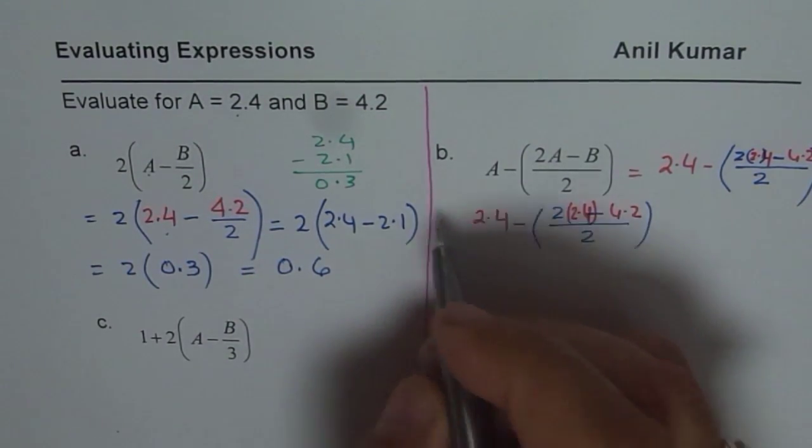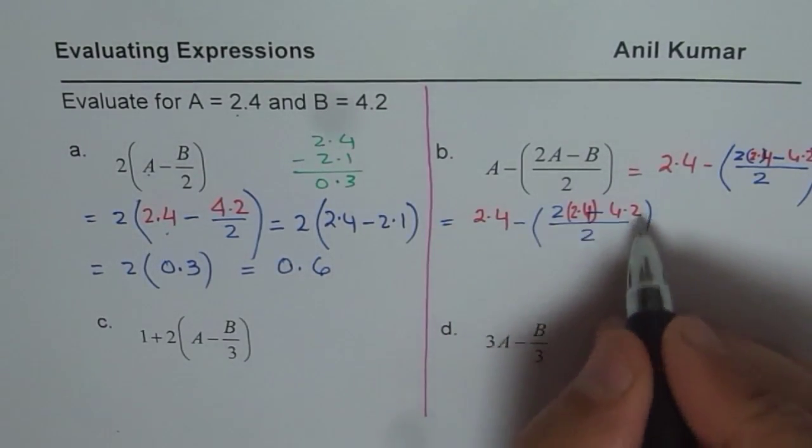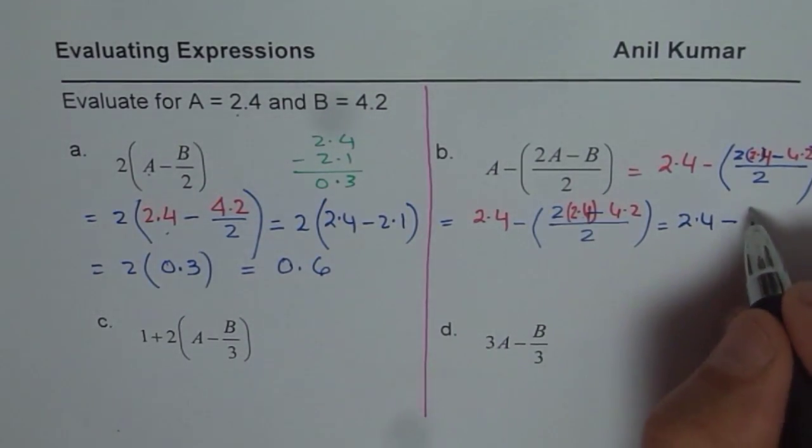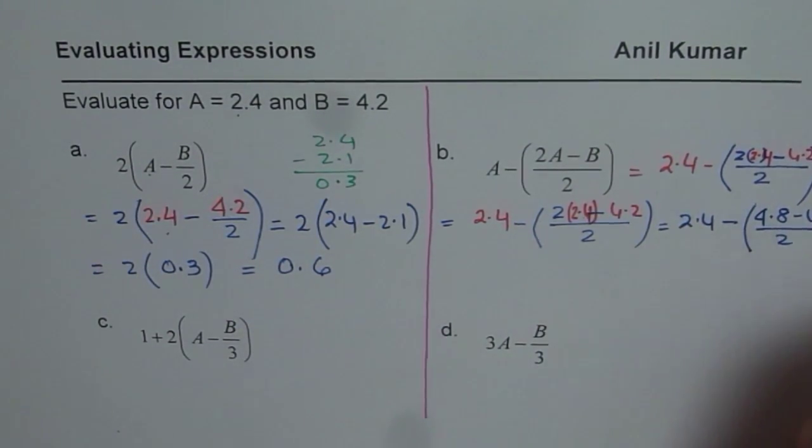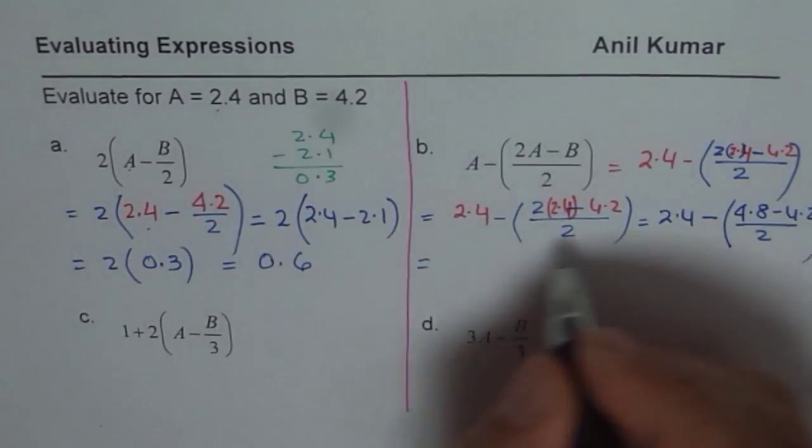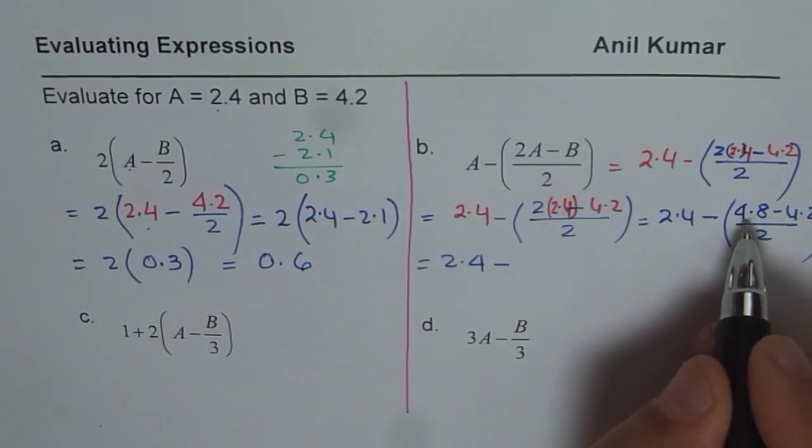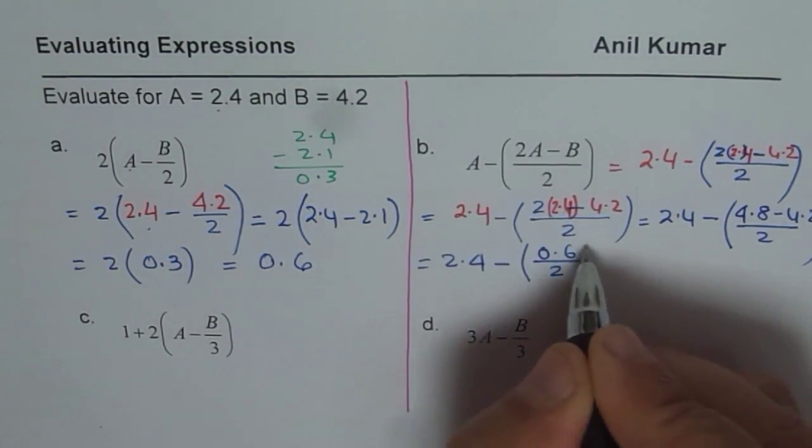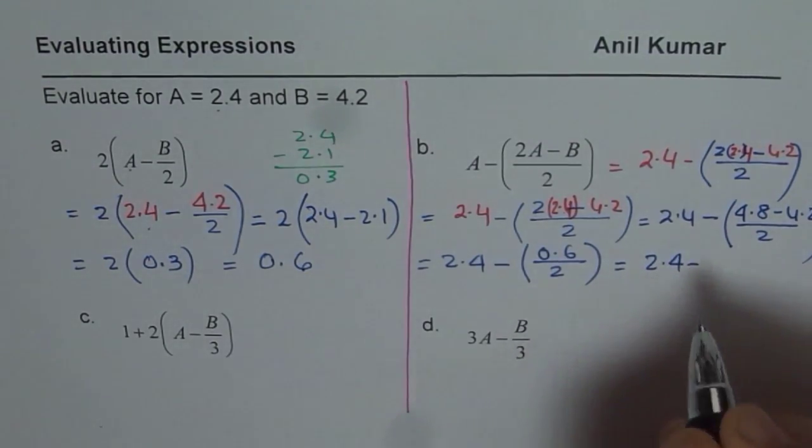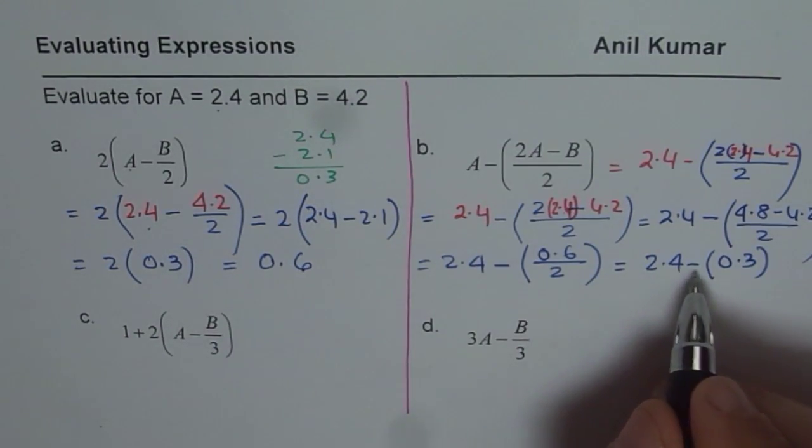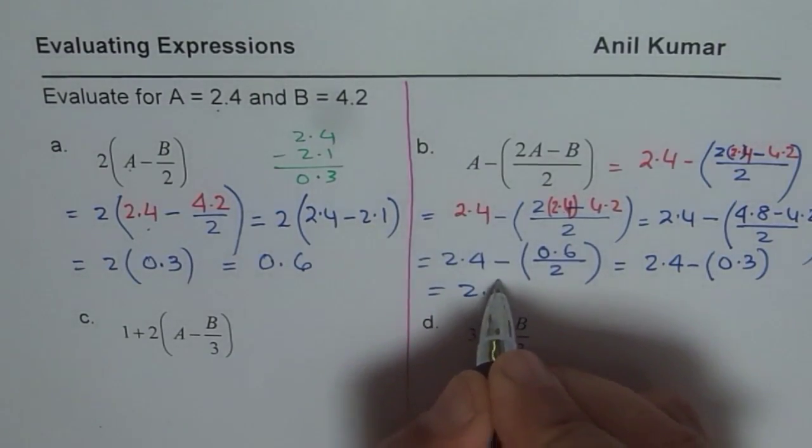What we need to do here is to evaluate the bracket first. So what we get here is 2.4 take away, 2 times 2.4 is 4.8. So 4.8 minus 4.2 divided by 2. So we get 2.4 take away 4.8 minus 4.2 is 0.6 divided by 2. Now that is 2.4 minus 0.6 divided by 2 is 0.3. So when you take away 0.3 from 2.4, what do you get? You get 2.1.